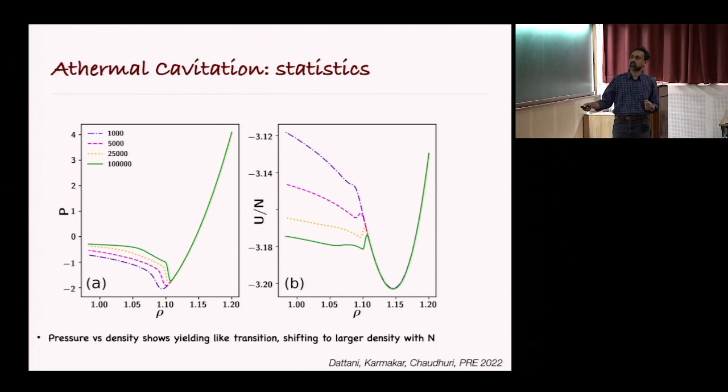The location of this point of cavitation depends upon the system size. The sharpness of the jump also depends on the system size. So basically, there is some critical effect that is going on.